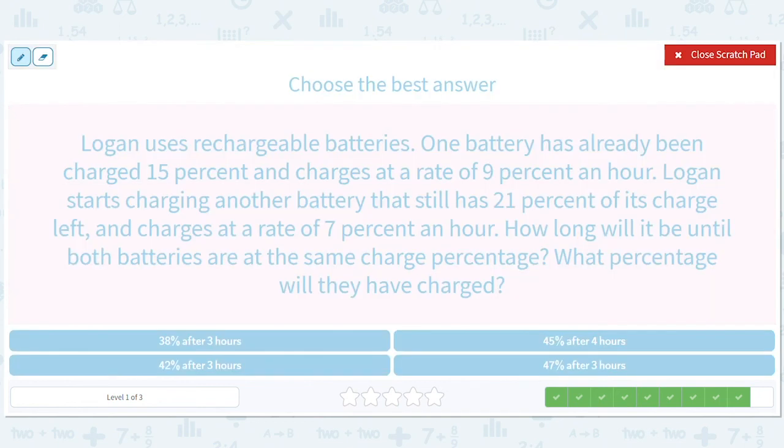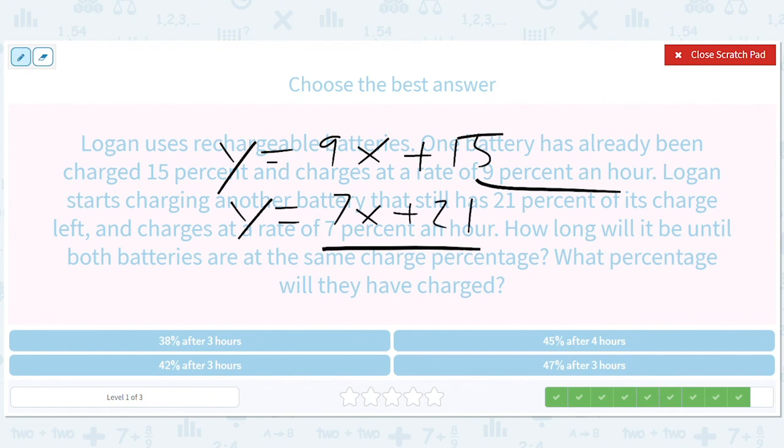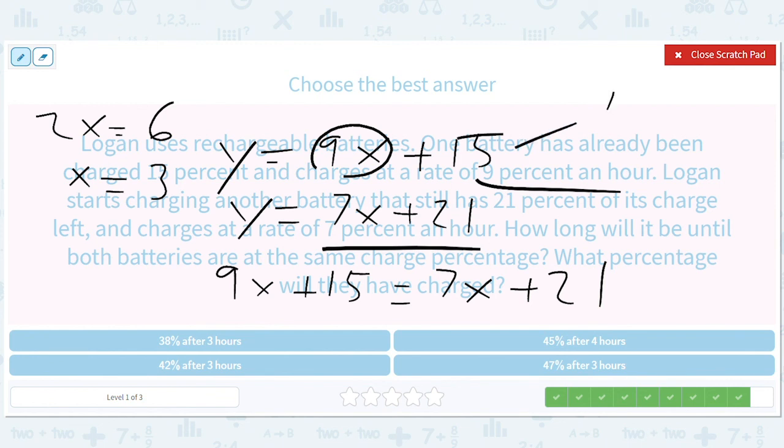Last one. 9% per hour. So Y equals 9X plus 15. 9X plus 15 equals 7X plus 21. That'll give us 2X equals 6 or X equals 3. So we end up with... Well, we need to do this. So 27 plus 15 is 42. So 42% in 3 hours.